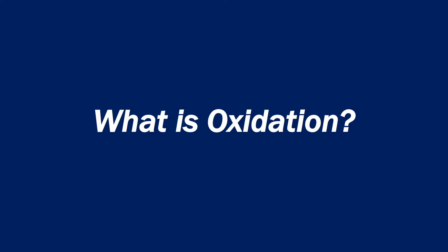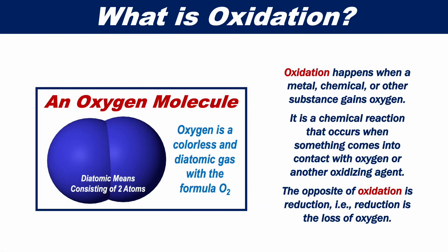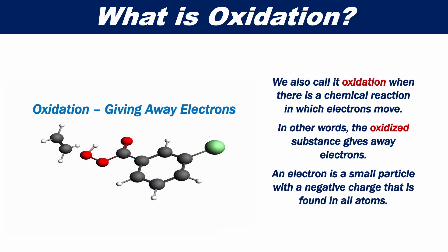What is oxidation? Oxidation happens when a metal, chemical, or other substance gains oxygen. It is a chemical reaction that occurs when something comes into contact with oxygen or another oxidizing agent. The opposite of oxidation is reduction — reduction is the loss of oxygen.